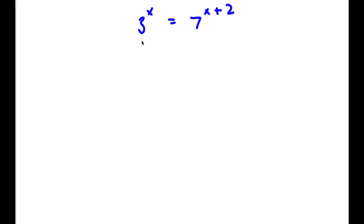Hey guys, welcome back to Click Academics. In today's video, I'm going to be teaching you guys how to solve one of the hardest math Olympiad problems. We have 3 to the power of x is equal to 7 to the power of x plus 2.